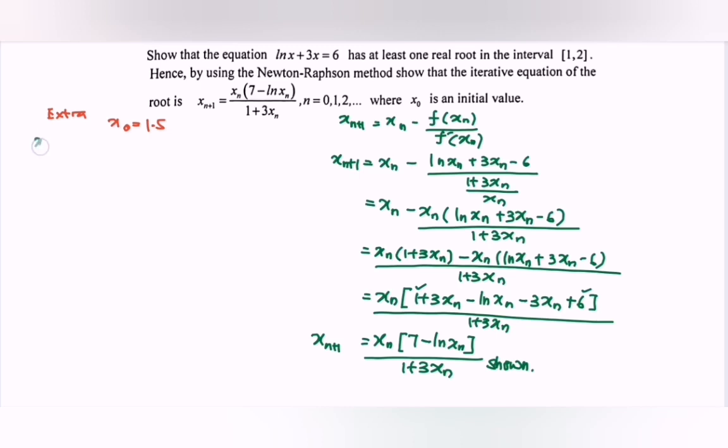So in here we will have x₁ = 1.5(7 - ln 1.5) / (1 + 3(1.5)). So x₁ will be equal to, so referring to the calculator, we have 1.79851.